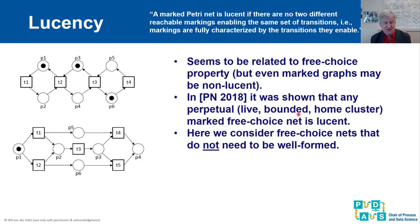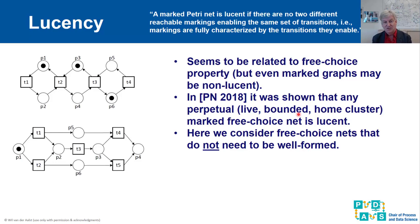Lucency was first investigated in my paper presented at Petri Nets 2018. At first glance it seems natural to link this to free choice nets, because non-free-choice constructs with long-term dependencies make a model non-lucent by definition. It is also formally provable that if a net is unbounded, by definition it is not lucent — multiple markings with different numbers of tokens will enable exactly the same set of transitions.